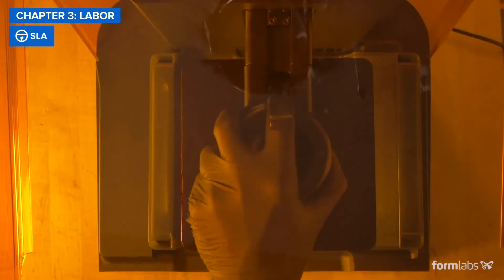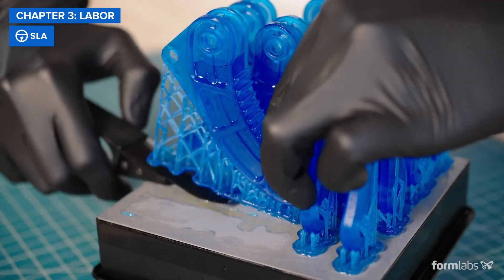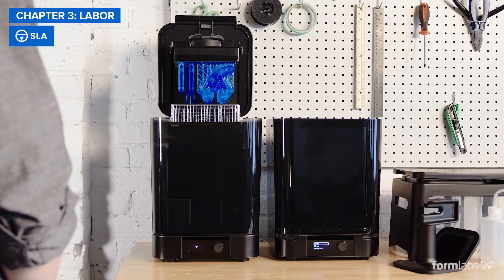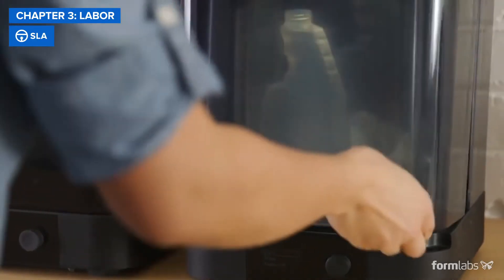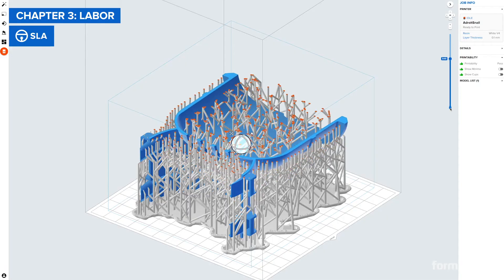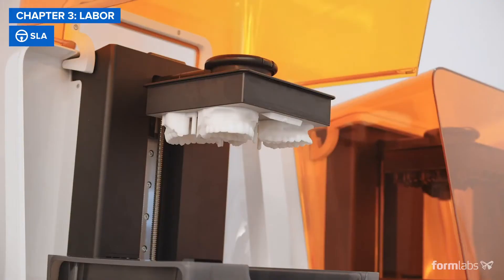When it comes to setup and maintenance, SLA printers are even easier and faster than FDM. Post-processing for SLA includes washing parts in a solvent and, depending on the material, also post-curing the parts. However, these steps can be automated to minimize time and labor. Thanks to light touch supports, support removal is quick and parts have a high surface quality right out of the printer.